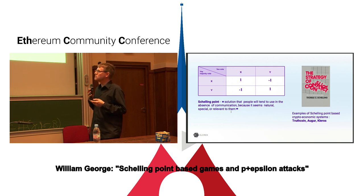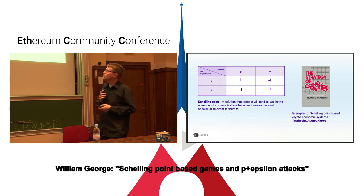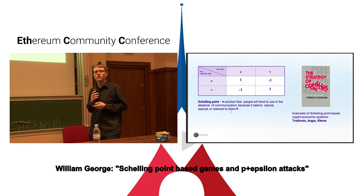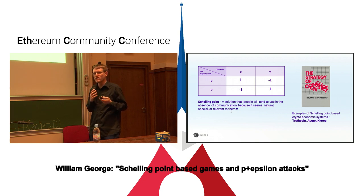Let me move back a bit and talk about Schelling point-based games in general before returning to these kinds of bribes and attacks. Imagine you have a vote — one of many votes — and you're given a binary choice between X and Y, and you want to vote with the majority for some reason. If you vote with the majority, you get a reward; if you vote against the majority, you get penalized. A priori, this payoff table is symmetric, so there's not necessarily a canonical choice between voting for X or Y.